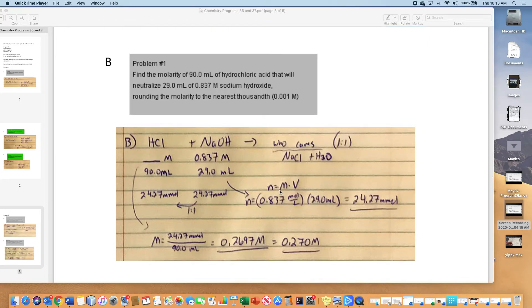Second problem, I had to restart to find a different problem. Pause the video and you can look at this for a moment. You have 29 mils of 0.837 molar sodium hydroxide. You want to find the molarity of 90 milliliters. If you need more hydrochloric, doesn't it make sense it's less concentrated, it's more dilute? So my answer will be less than this.